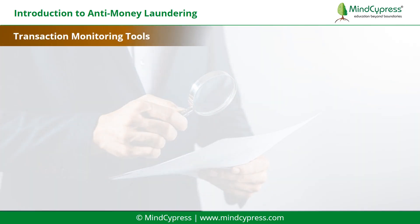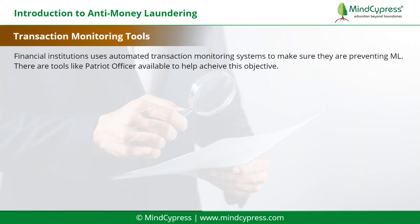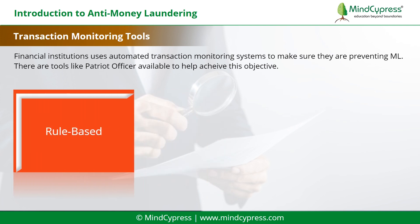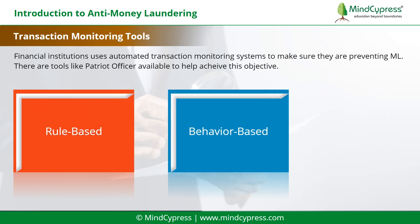Transaction monitoring tools. Financial institutions use automated transaction monitoring systems to make sure they are preventing money laundering. There are tools like Patriot Officer available to help achieve this objective. The tools are of two types: first is rule-based, and second is behavior-based.